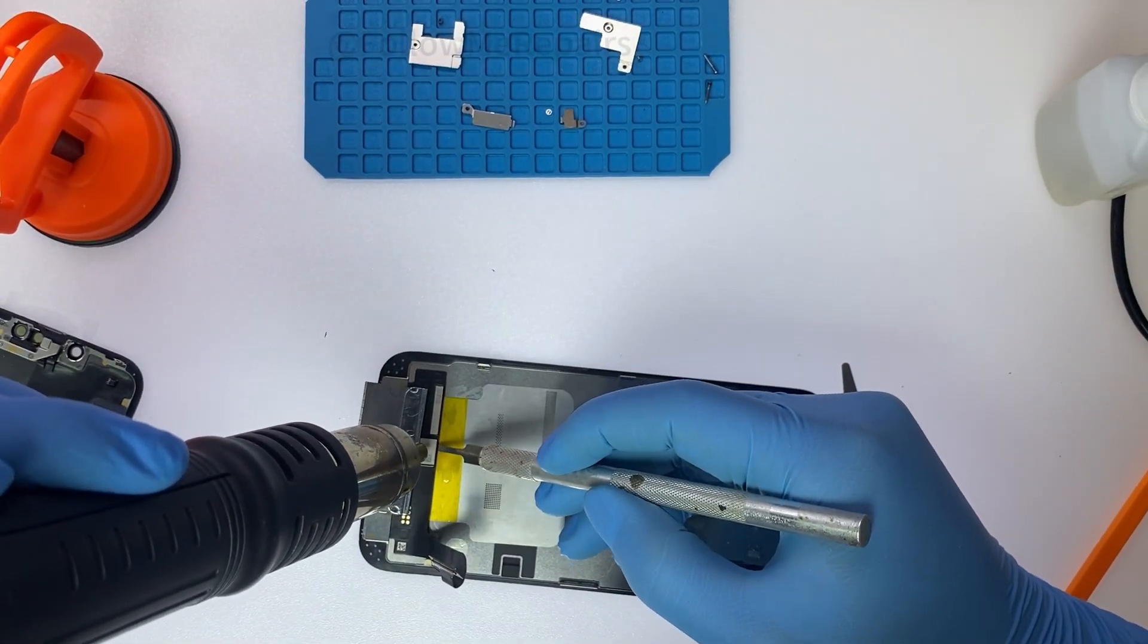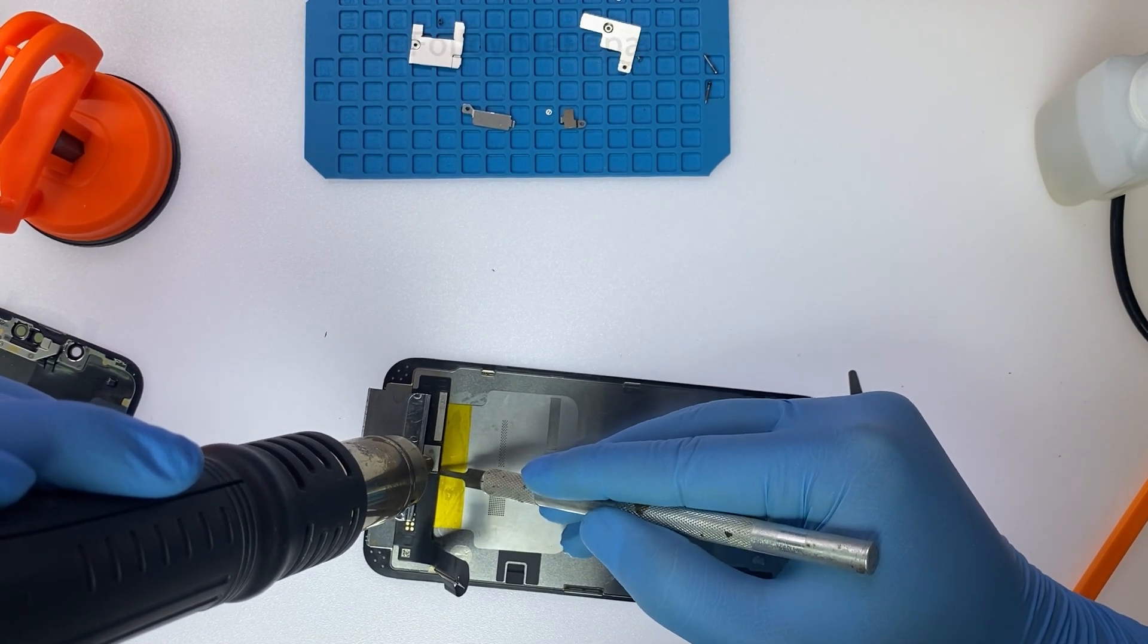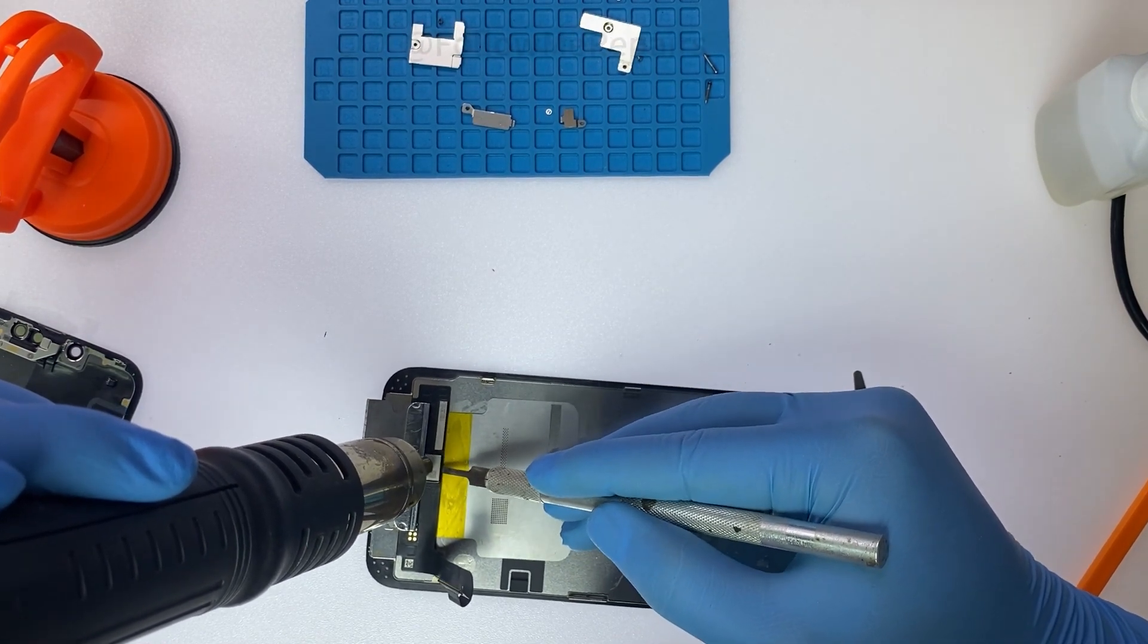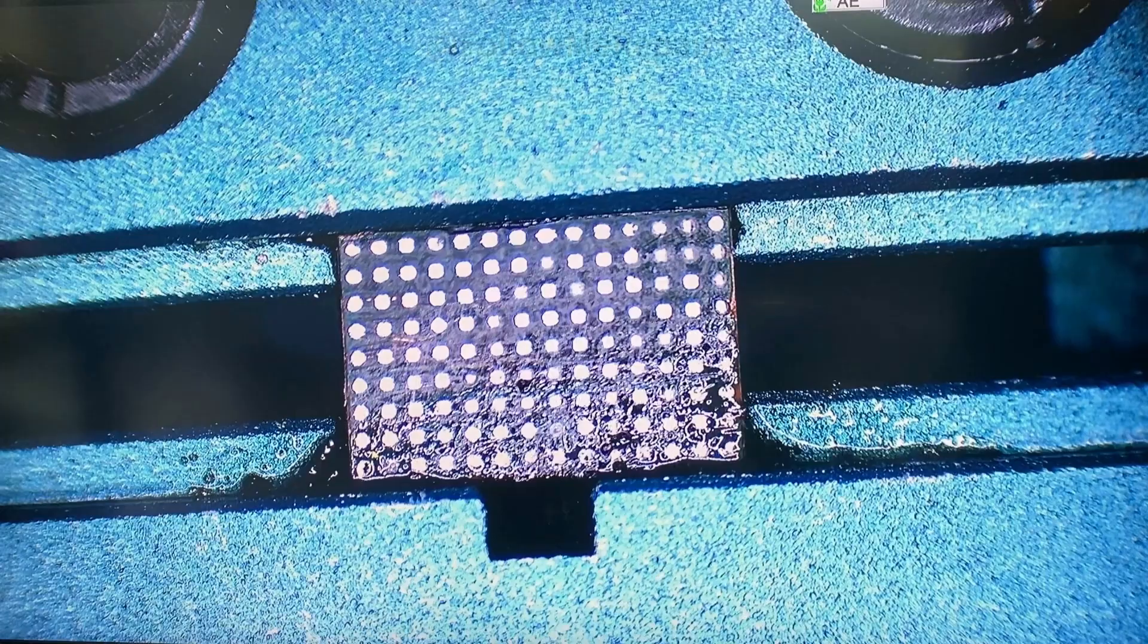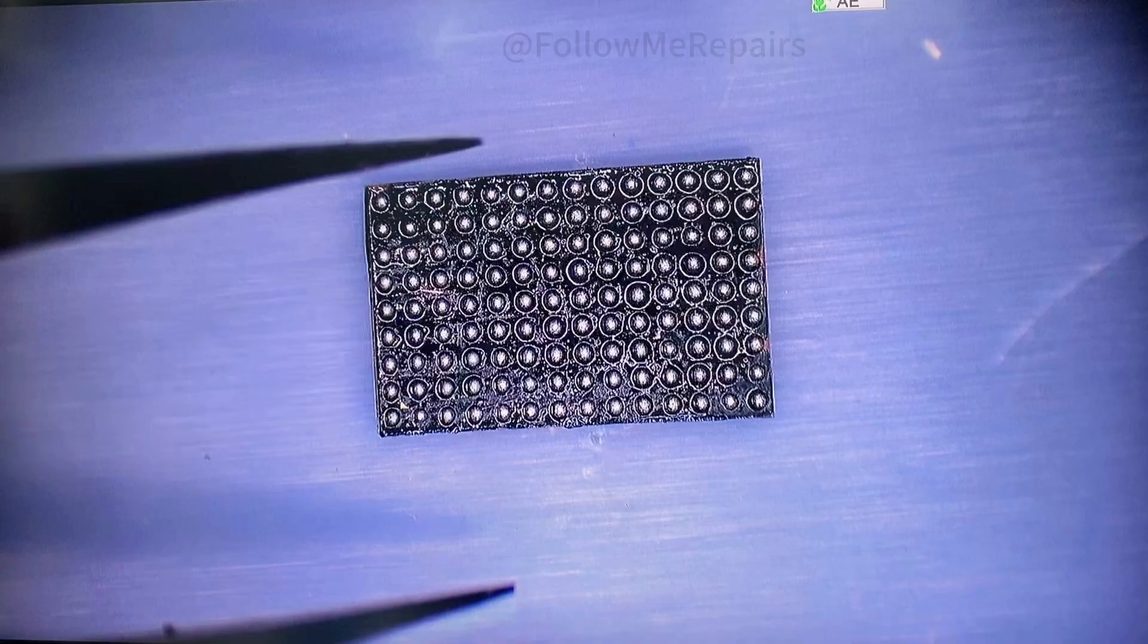Remove the chip from the old screen. Trim the BGA chip pins. Apply solder to the BGA chip pins. Complete the BGA chip soldering.